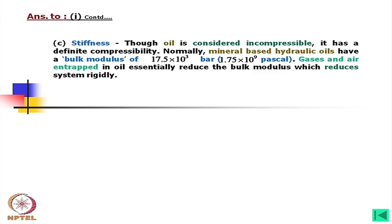Next is stiffness. Although hydraulic oil is considered incompressible, it has a definite compressibility. Mineral-based hydraulic oils have a bulk modulus of 17.5 × 10³ bar, which is 1.75 × 10⁹ Pascals — comparable to the modulus of elasticity of metals. Gases and entrained air essentially reduce the bulk modulus, which reduces system rigidity.